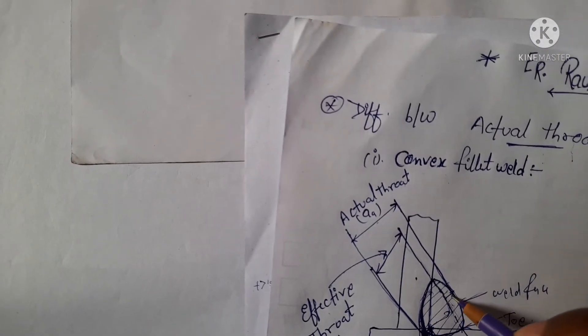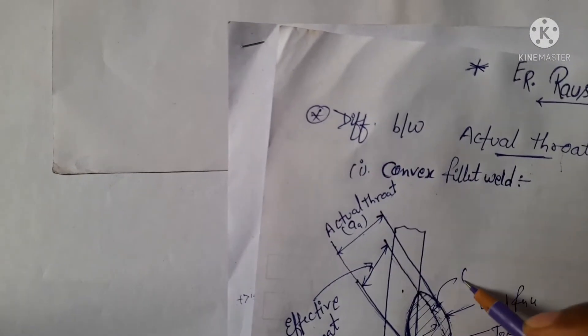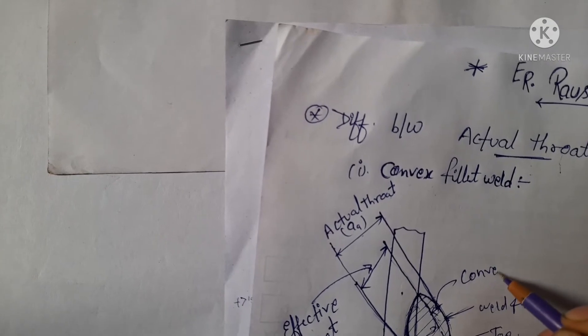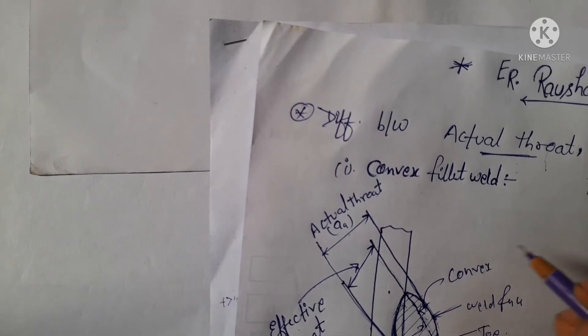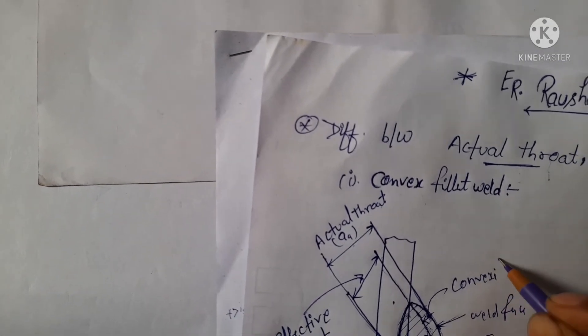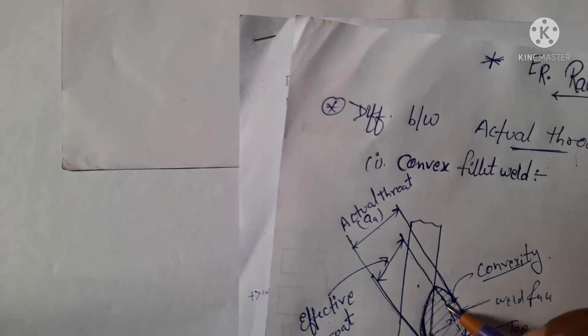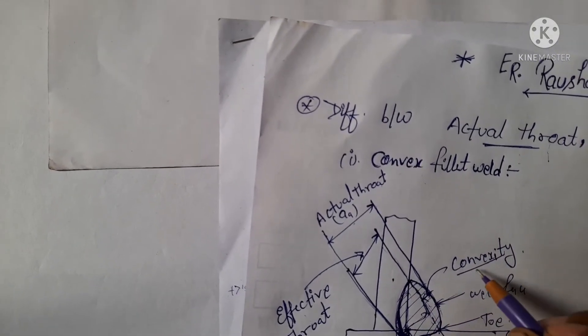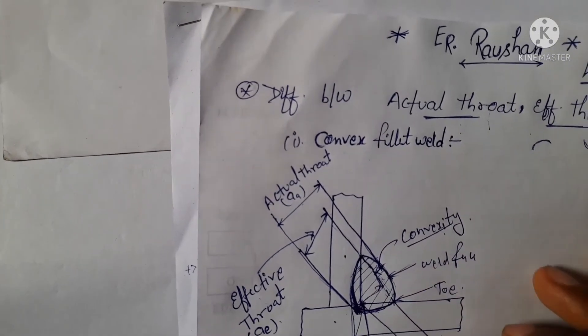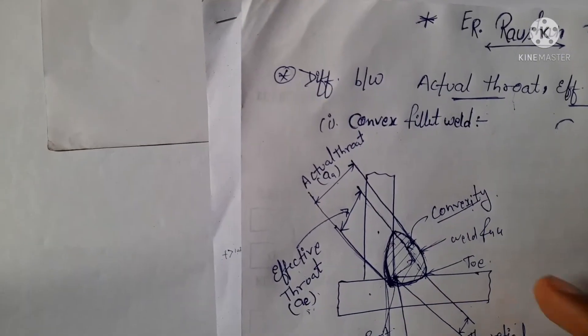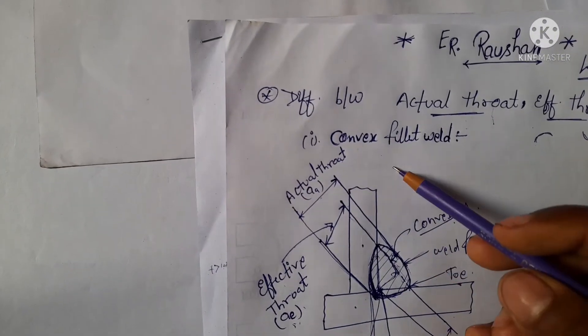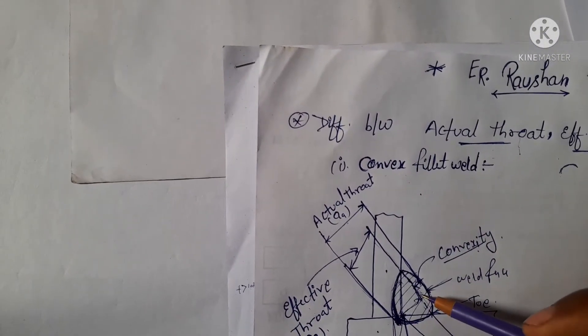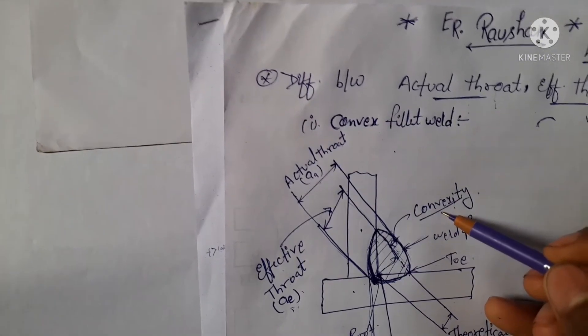The distance from this weld face to the imaginary line is known as convexity. This imaginary line to the weld face distance is known as convexity. This is in convex welding, because this is a convex welding, so this is convexity.